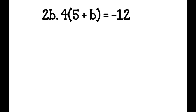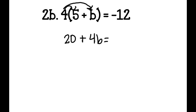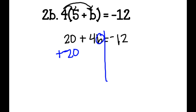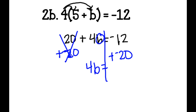Problem 2b: I have 4 times the quantity of 5 plus b equals negative 12. I take 4 times 5 and 4 times b. 4 times 5 is 20, and 4 times b is 4b, equals negative 12. I'm going to add a negative 20 to both sides to cancel it out — make sure your negative sign is clear. These cancel out, and I'm left with 4b equals negative 12 plus negative 20, which is negative 32.